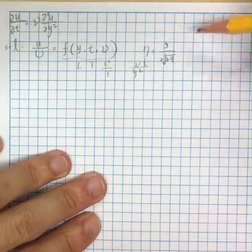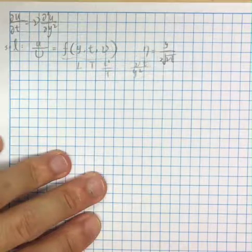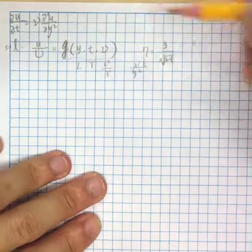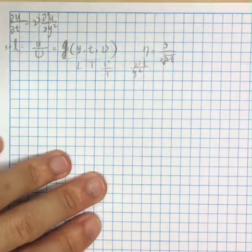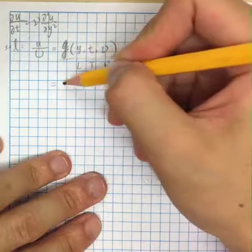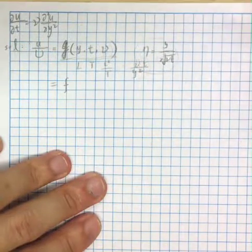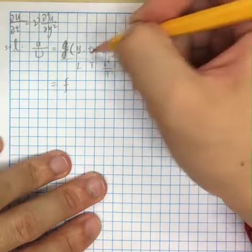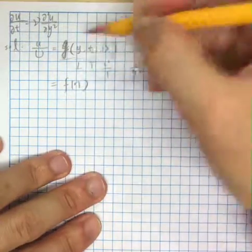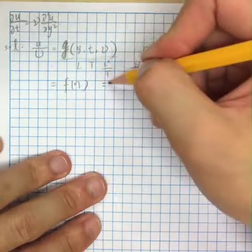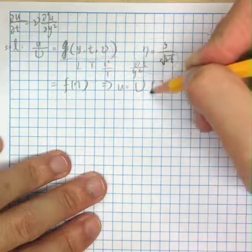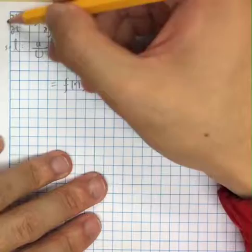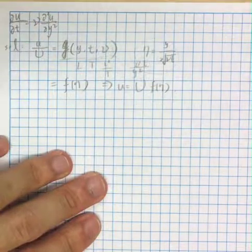Do you recognize that these two forms are essentially the same thing? So instead of writing any random function of these three variables, we can say this should just be a function of eta, the non-dimensional number formed by the three variables. So u over capital U should be f(eta), and u is just equal to capital U times f(eta).